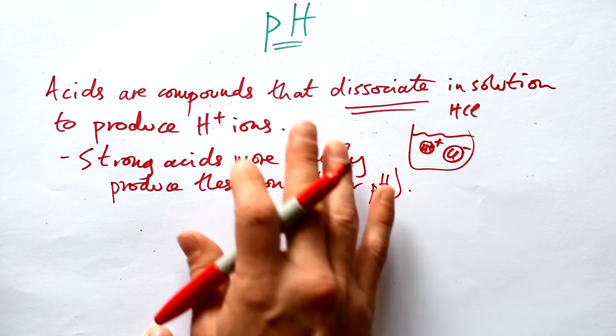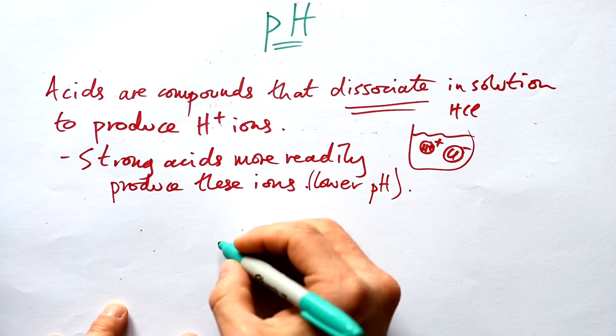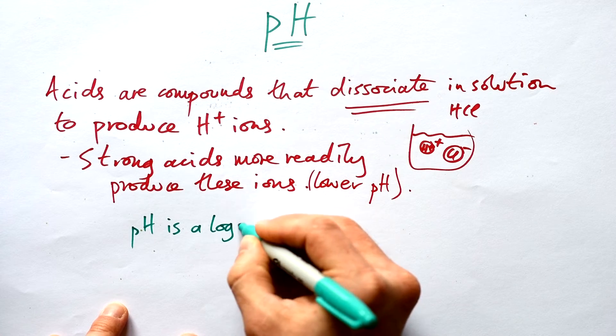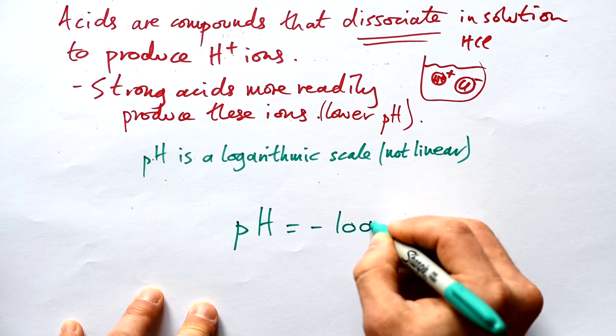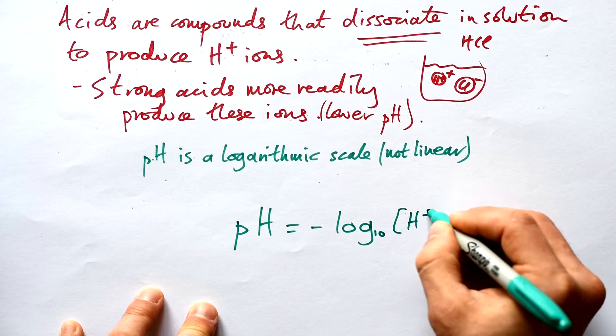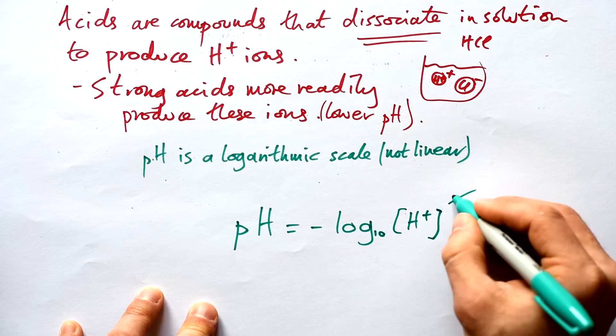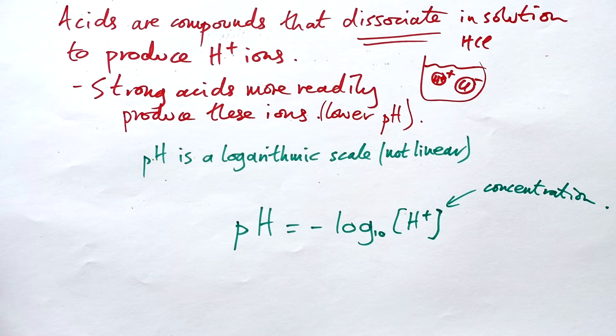But how does that translate to a number on the actual pH scale then? Well, the pH scale is what we call a log scale or a logarithmic scale. pH is equal to minus the log to the base 10 of the concentration of H+ ions. That's what the square brackets means—that just means concentration. And that might seem a little bit complicated, and it kind of is.